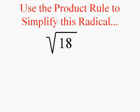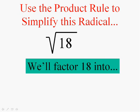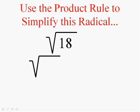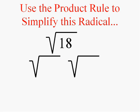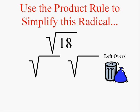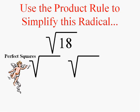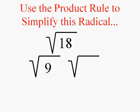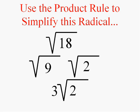Now we're going to use this rule to simplify radicals. I'm going to factor 18 into its largest perfect square and whatever is left over — the garbage leftover. The largest perfect square that goes into 18 is 9, and that leaves a leftover of 2. The square root of 9 is 3, and 2 is garbage because there's nothing you can do with it. So the square root of 18 simplified is 3 square root of 2.